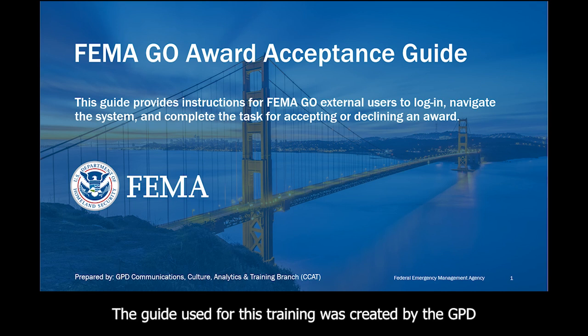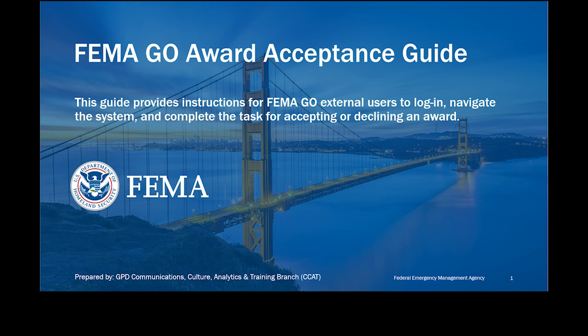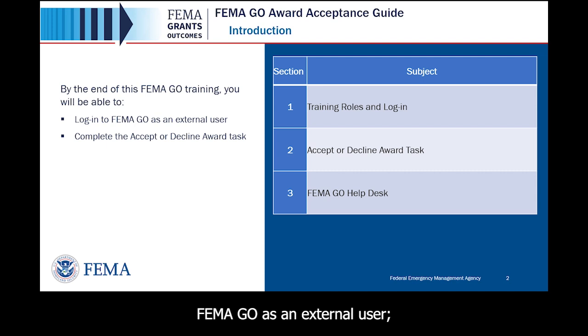The guide used for this training was created by the GPD Communications, Culture, Analytics, and Training Branch. By the end of this FEMA GO training, you will be able to log in to FEMA GO as an external user and complete the Accept or Decline Award task.